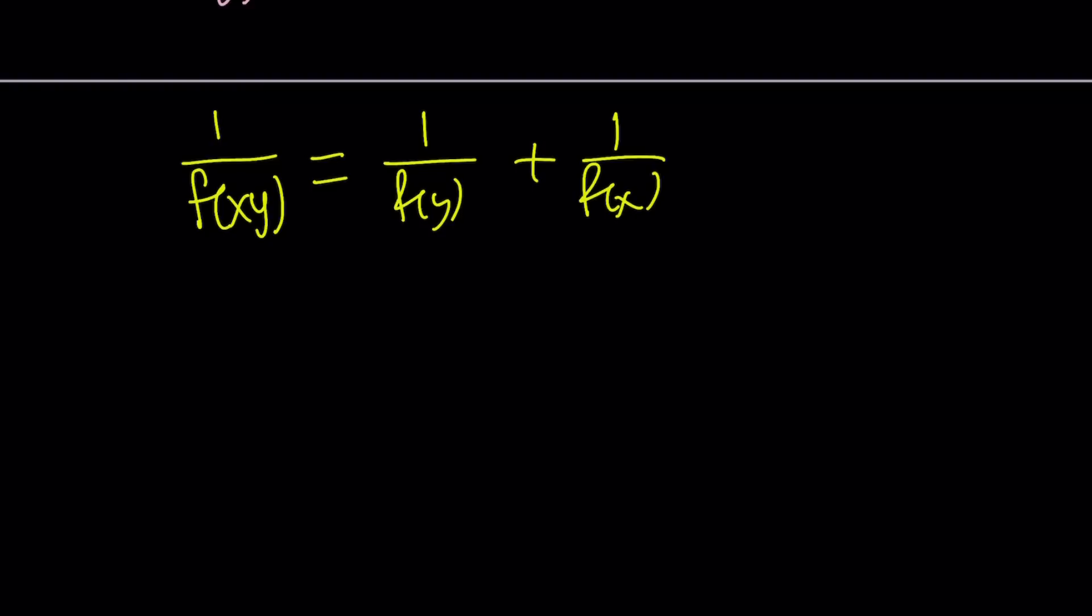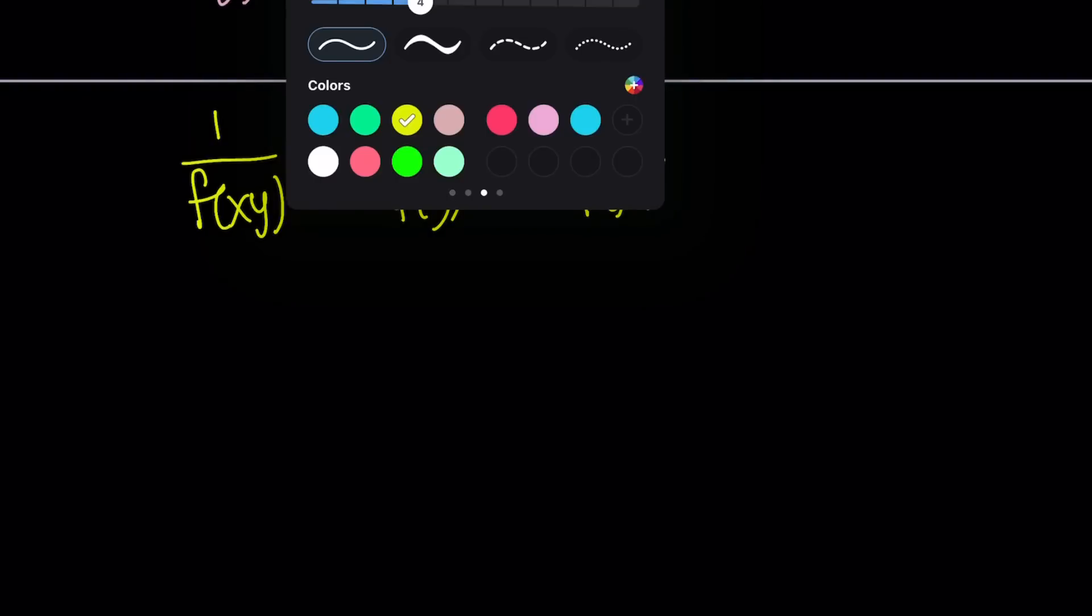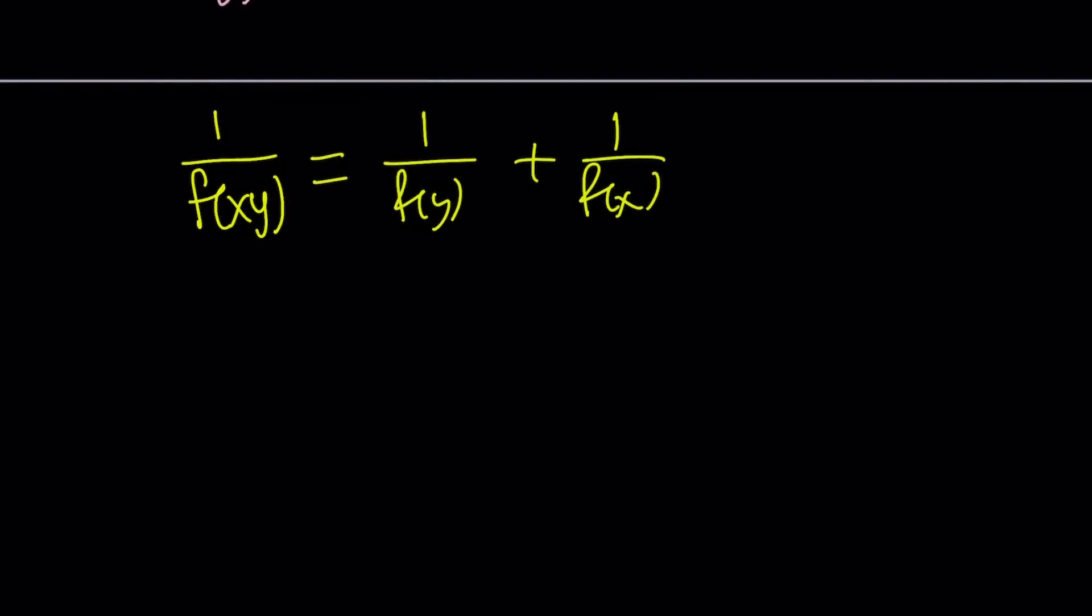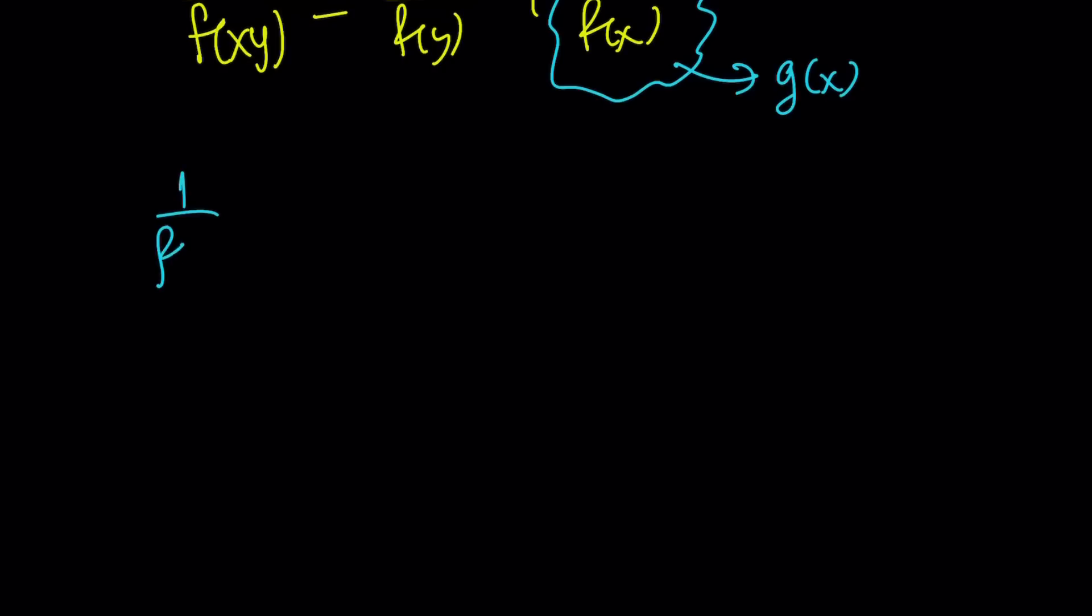A lot of times we use the strategy for functional equations. We can use substitution. I don't want to deal with reciprocals. I want to make it more polynomial-like, or I don't want any fractions in other words. So why not define another function in terms of f of x? So let's go ahead and set 1 over f of x equal to g of x.